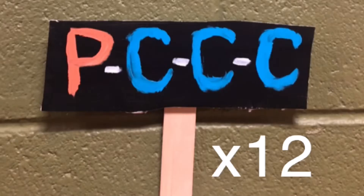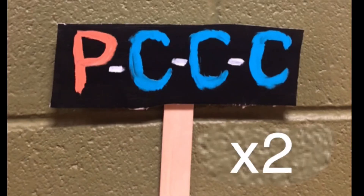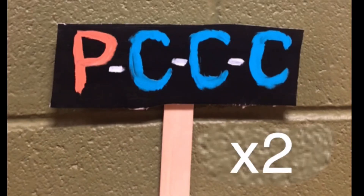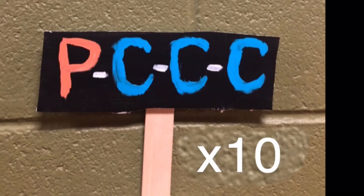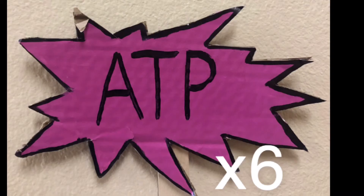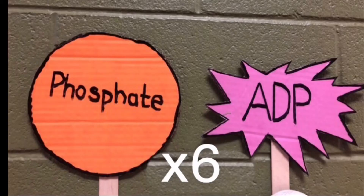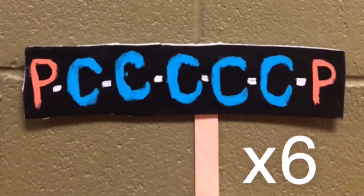You have 12 G3Ps and you take 2 G3Ps away, which makes glucose. Then you have your glucose molecule and 10 leftover G3Ps. Then you get 6 RBPs and 6 ATP. Those 6 ATP become 6 ADPs plus 6 phosphates. Finish your cycle by going back to the 6 RUBPs, and it ends the Calvin cycle — then it repeats all over again.